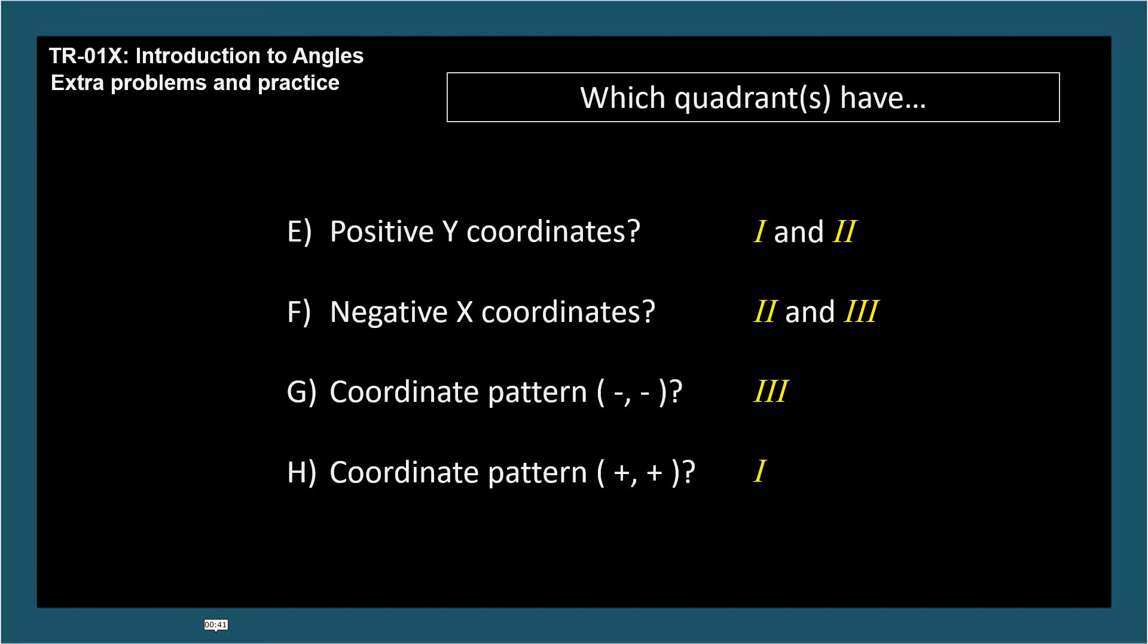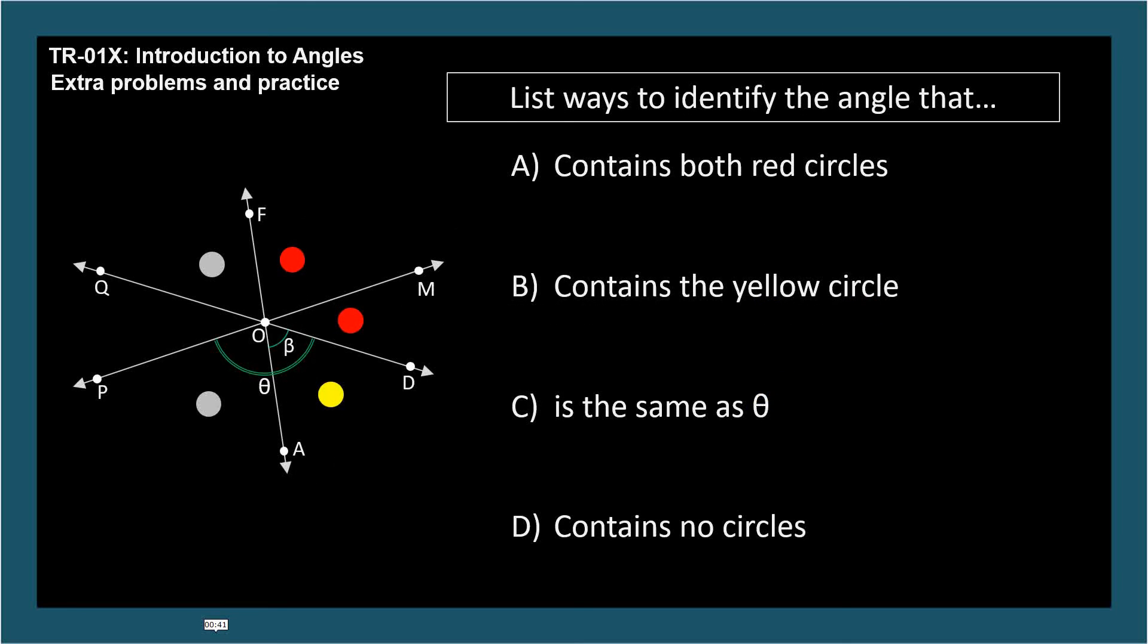We'll do these one at a time, too. List ways to identify the angle that contains both red circles. Angle FOD or Angle DOF. List ways to identify the angle that contains the yellow circle. Angle AOD, Angle DOA, or Angle Beta.